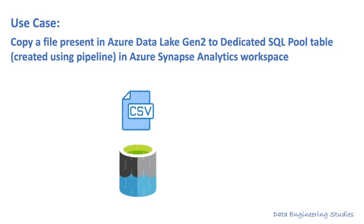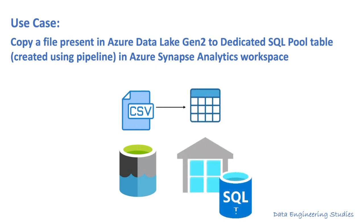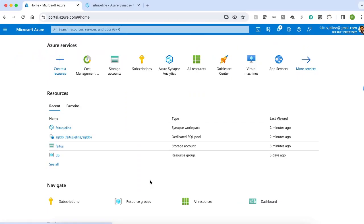We have a CSV file present in Azure Data Lake Gen2. We are going to load the data from that CSV file to a dedicated SQL pool table which is created on the fly using a pipeline in Azure Synapse Analytics workspace. Before we get into the implementation, let's see some of the prerequisites of this use case.